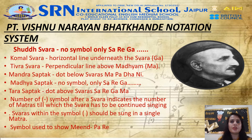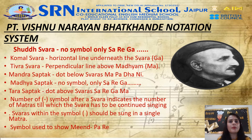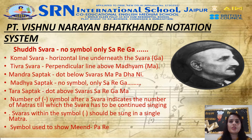Pandit Vishnu Narayan Bhatkhande created his notation system and used it in a book published under the name Hindustani Sangeet Padati Kramik Pustak Malika, in six parts. The symbols used in the notation system are as follows: Shuddh Swara — no symbol, written as Sa-Re-Ga-Ma-Pa-Dha-Ni; Komal Swara — a horizontal line under the Swara.